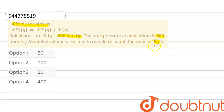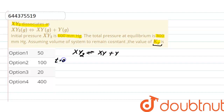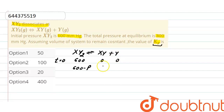So in this question we have to find out the value of Kp. The reaction here is XY₂ dissociating into XY and Y. Initially, the pressure of XY₂ is 600, and the pressure of XY and Y is 0. At equilibrium, the pressure of XY₂ is reduced, and the pressure of XY and Y will each be some value.